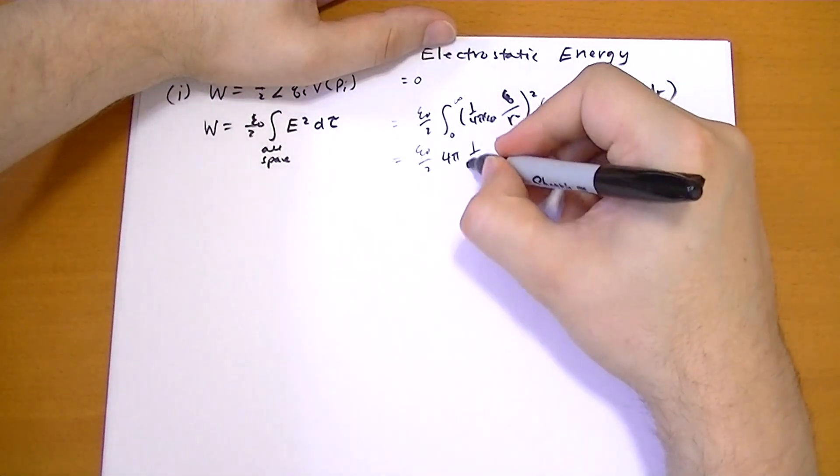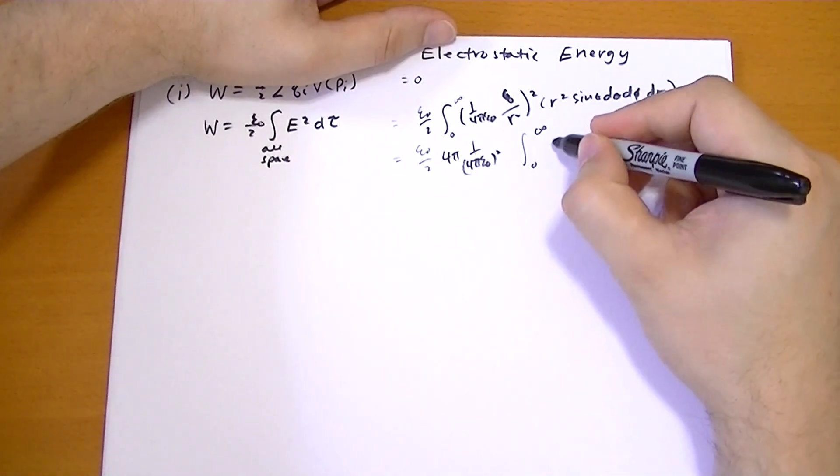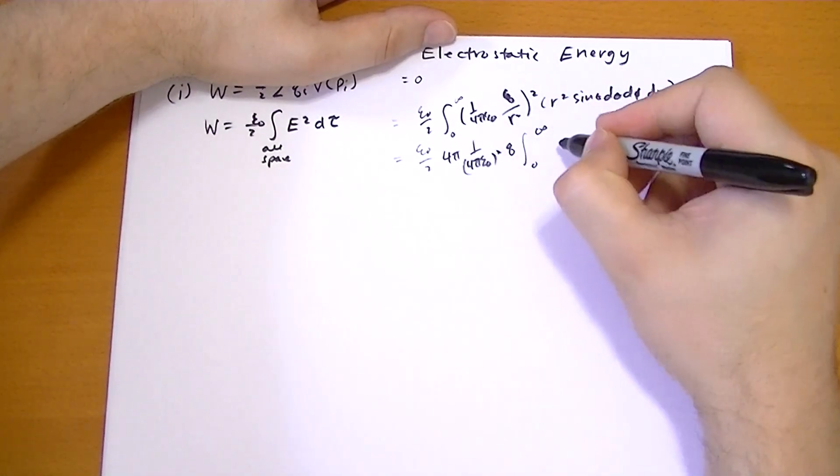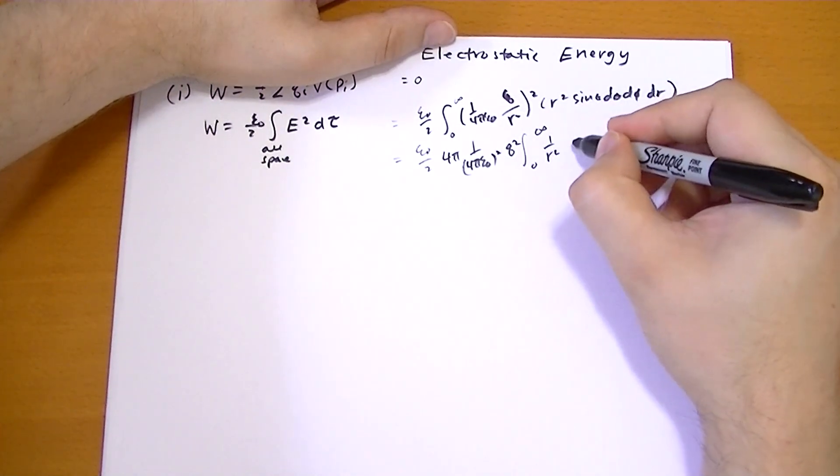And then we have 1 over 4 pi epsilon not squared. And now we have the integral from zero to infinity of, oh, q squared, of r squared. And those cancels, you get 1 over r squared, dr.